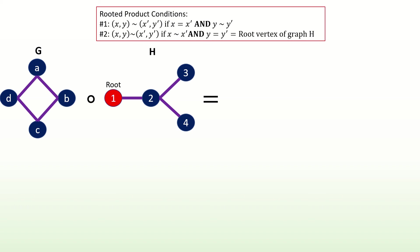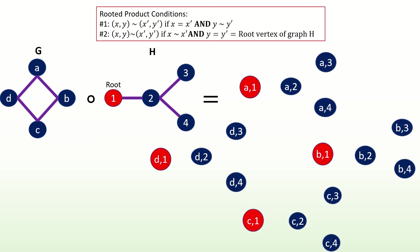First, find the vertex set, which is the Cartesian product of the input graphs' vertex sets. Note that all the vertices which have a right entry equal to the root vertex in the second input graph are colored red. Next, let's find all adjacencies that derive from the first adjacency condition. We need to find all pairs of vertices with the same left entry and with adjacent right entries. For example, vertices a1 and a2 have the same left entry a, and their right entries 1 and 2 are adjacent in graph h, so a1 and a2 will be adjacent in the product graph. Feel free to pause the video and find all of these adjacencies yourself.